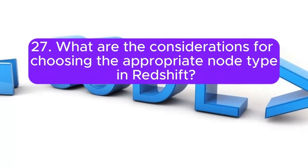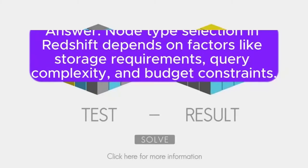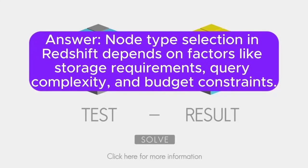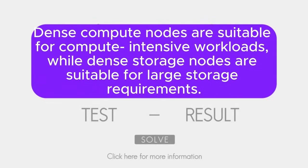Question 27: What are the considerations for choosing the appropriate node type in Redshift? Answer: Node type selection depends on factors like storage requirements, query complexity, and budget constraints. Dense compute nodes are suitable for compute-intensive workloads, while dense storage nodes are suitable for large storage requirements.